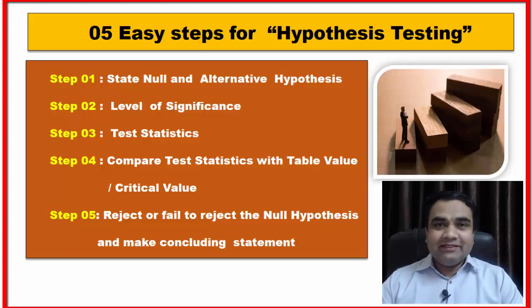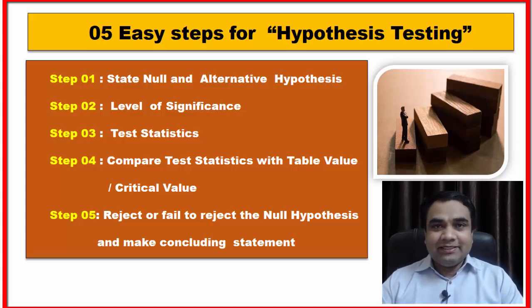Now these are the 5 simple steps of hypothesis testing. First, state the null hypothesis and alternative hypothesis. Second, determine the significance level. Third, select your test statistics.